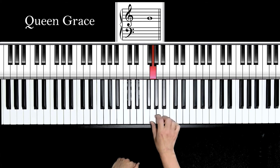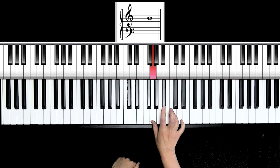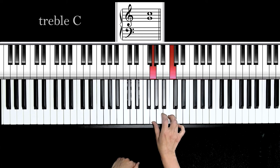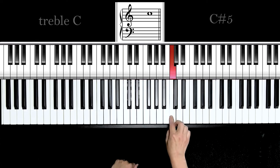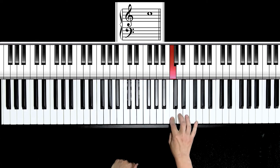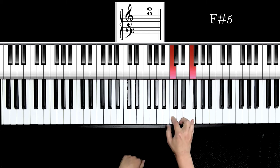Then if you go up a fourth, 1, 2, 3, 4, you have treble C, which is C number 5, an octave above middle C. Go up another fourth, 1, 2, 3, 4. And I have this F number 5 on your piano.